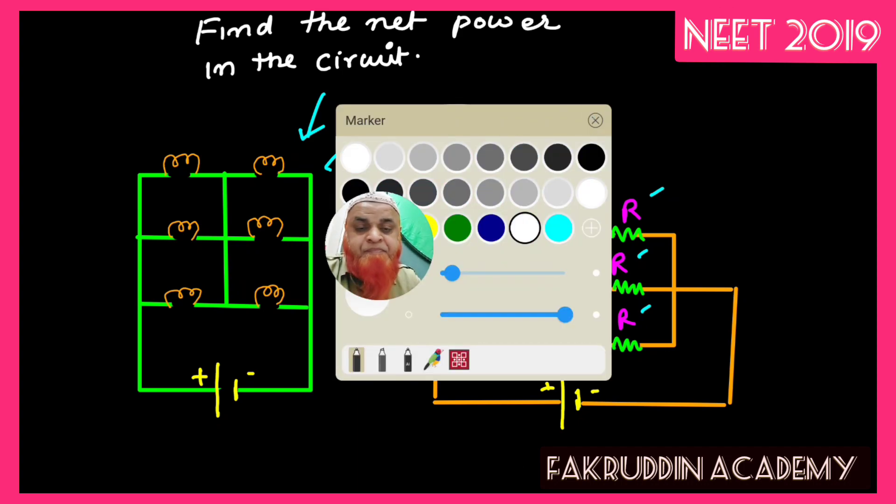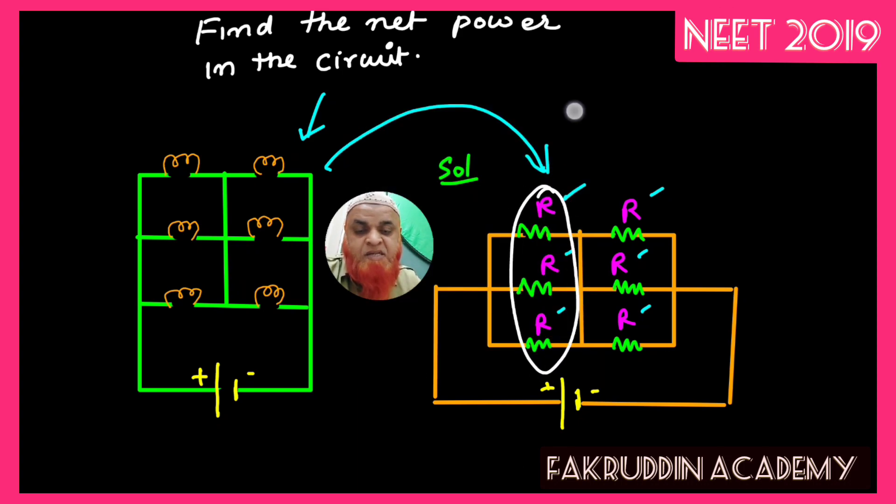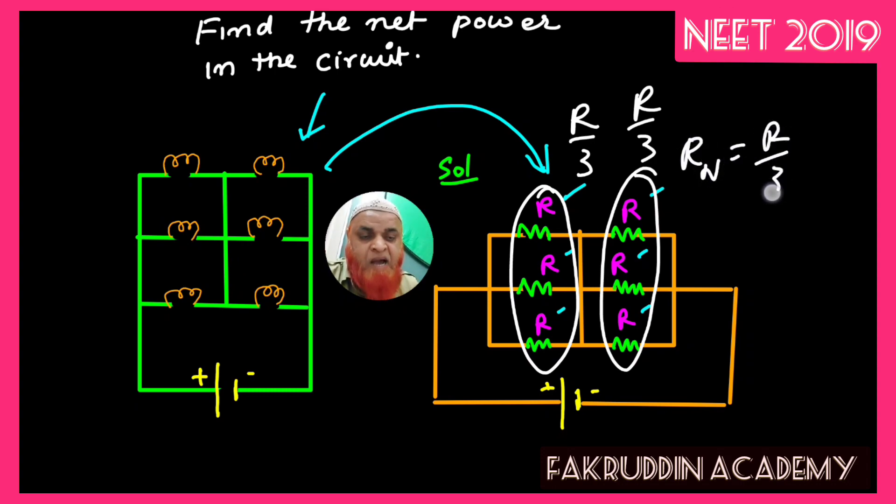So if you consider here, these three resistors are considered as R by 3. These three resistors are also considered as R by 3, and they are in series. So R_net is going to be R/3 plus R/3, which is nothing but 2R/3.